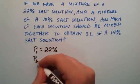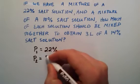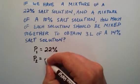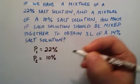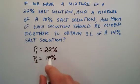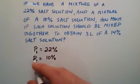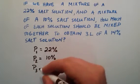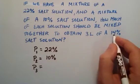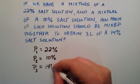Then we have P2, the percentage of salt in the second solution, and that's going to be 10%. We want to combine a certain amount of these two together to get an end result, and our solution in the end is going to be 14% salt.